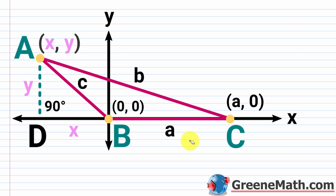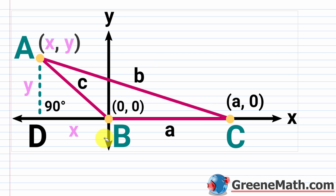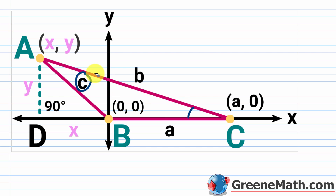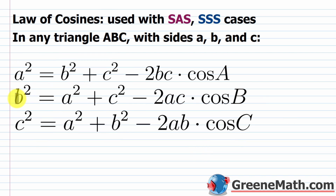Similarly, uppercase B is the measure of angle B, and lowercase b is the length of the side opposite angle B. Uppercase C is the measure of angle C, and lowercase c is the length of the side opposite angle C. We're specifically going to derive: b squared equals a squared plus c squared minus 2ac times the cosine of B.